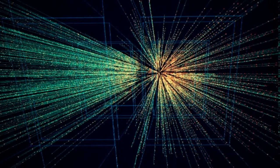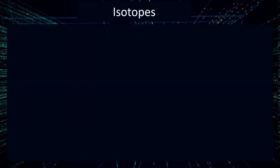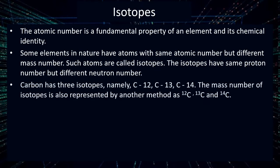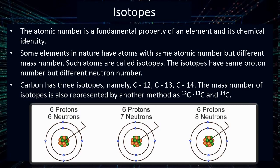The atomic number of an element is the fundamental property of an element and its chemical identity. But there are some elements in nature which have the same atomic number but different mass number. That is, atoms of the same element having the same number of protons but different number of neutrons in the nucleus. Such atoms are called isotopes. For example, carbon has 3 isotopes: C-12, C-13 and C-14. They have the same number of protons but different number of neutrons.